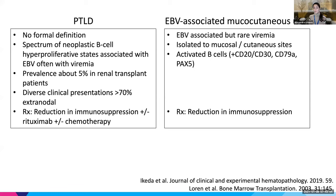EBV-associated mucocutaneous ulcer — you can think of this as the beginning spectrum of PTLD or a more benign part of the pathology. EBV is associated, but there's rare viremia in these patients. It's really thought to be isolated to the mucosal or cutaneous site it's involving, and the pathology shows activated B-cell phenotypes. Treatment is reduction in immunosuppression and you don't really need more if it's just this EBV-associated mucocutaneous ulcer.